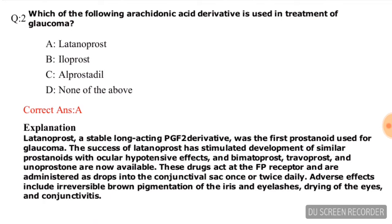Question number two: Which of the following arachidonic acid derivatives is used in the treatment of glaucoma? Options are latanoprost, iloprost, alprostadil, and none of the above. The correct answer is latanoprost, that is option number A. The explanation is given and you can read it by pausing the video.